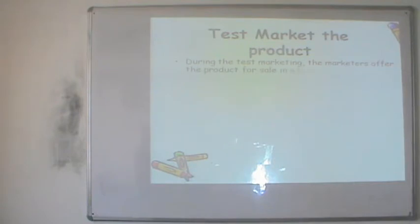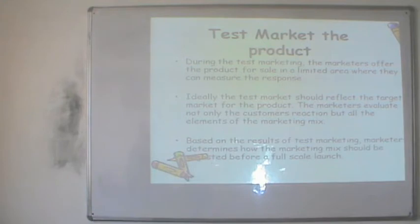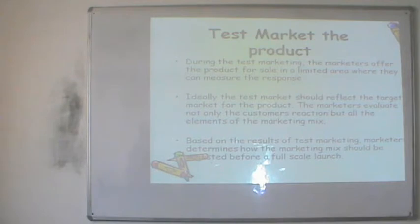Step seven is test marketing. The marketer offers the product for sale in a limited area — a city or locality — to measure responses from a group of sample consumers. Ideally the test market should reflect the target market for the new product. The marketer evaluates not only the customer's reaction but all elements of the marketing mix: product, price, place, and promotion. Based on these results, the marketer decides whether changes are needed or if responses are good enough to proceed to full-scale launch.